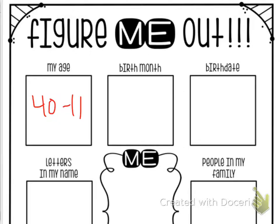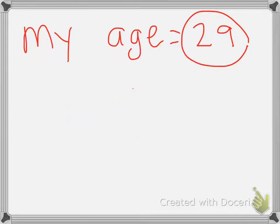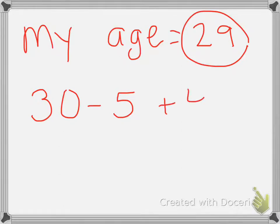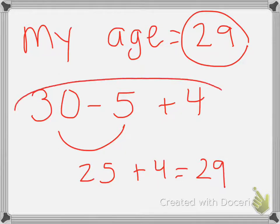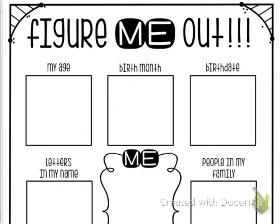Maybe you'd like to combine different operations. Another example: you could do 30 minus 5 plus 4, because 30 minus 5 is 25, and when I add 4 it equals 29. So this could be another problem I could put in that box.